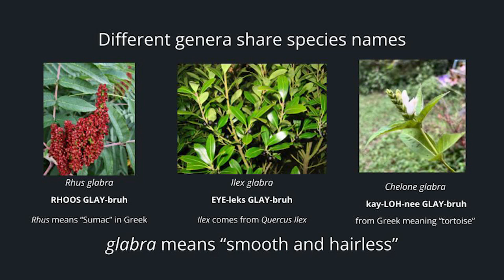Earlier I mentioned that different genera can share the same species name. Here we have three examples of plants that all have the species name glabra, meaning smooth and hairless: Rhus glabra, Ilex glabra, and Chelone glabra. Rhus simply comes from the Greek word meaning sumac — so smooth sumac is the common name. Ilex, covering all the hollies, comes from Quercus ilex, an English oak with small pointed leaves similar to many hollies. Ilex glabra is different, however — it gets the name glabra because the leaves themselves are smooth and not pointed. Chelone gets its species name from having smooth stems and leaves.